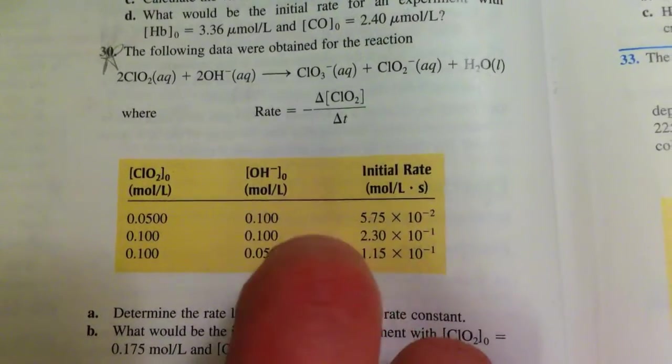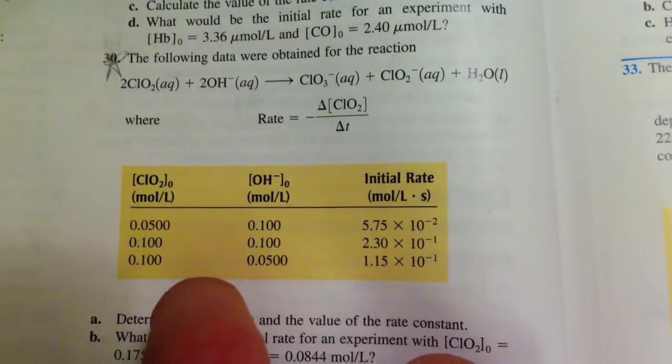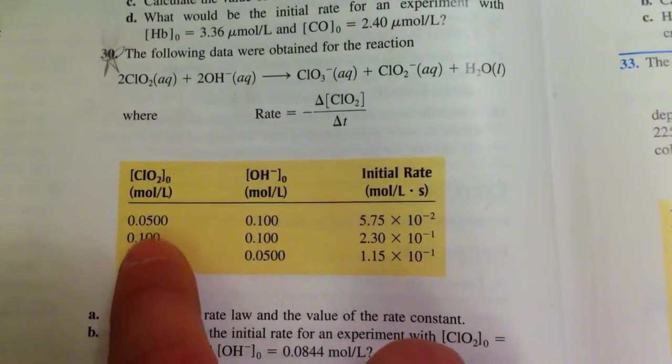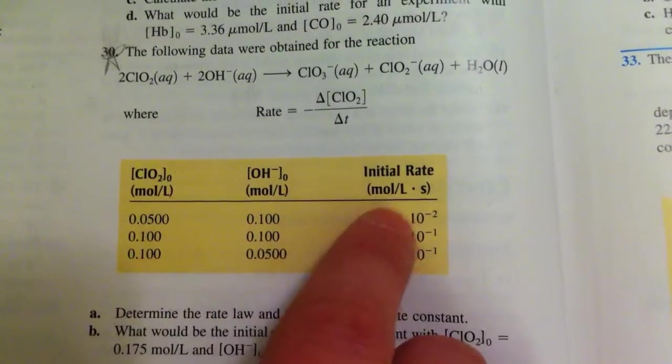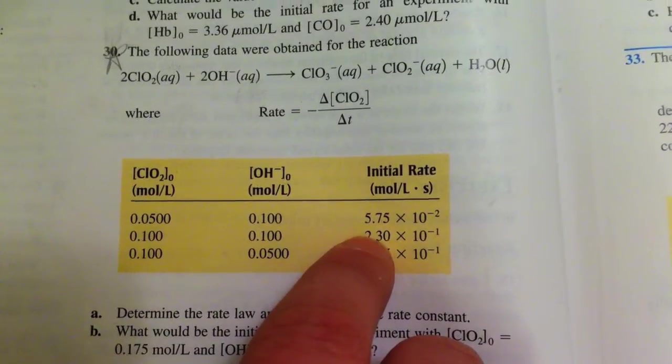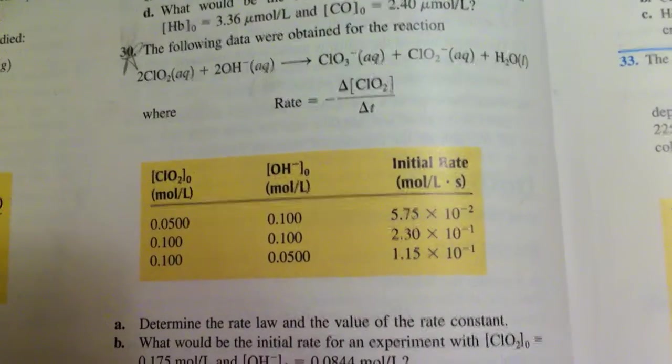if you divide this by that, you're going to see 4. So this was doubled, the change here is 4 times as much, so the exponent there will be squared.